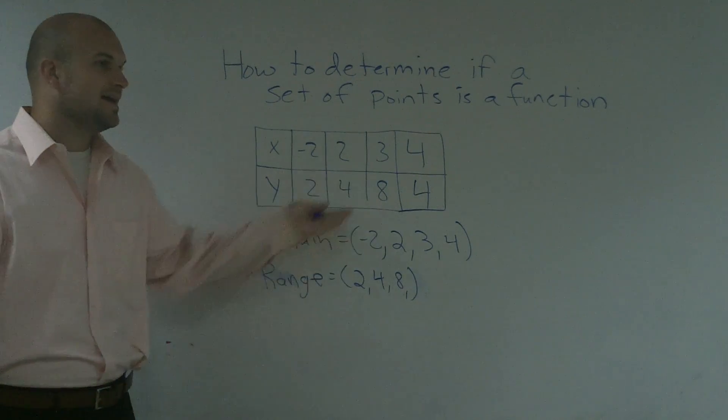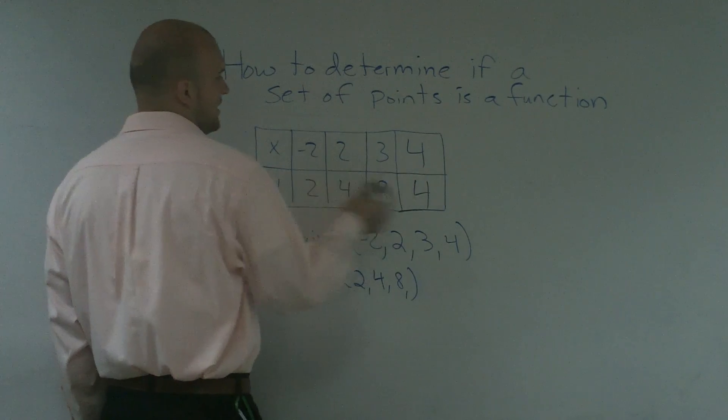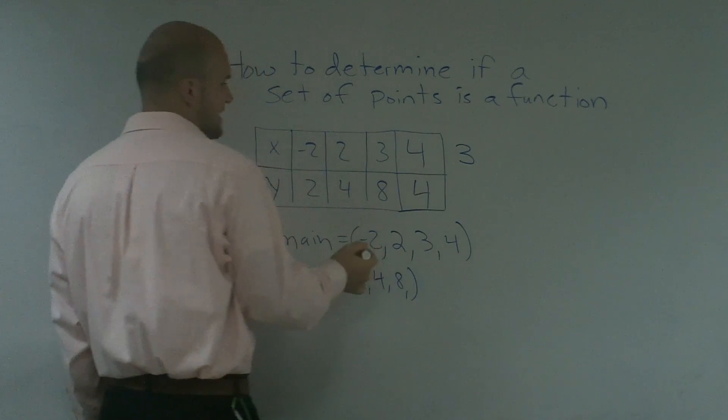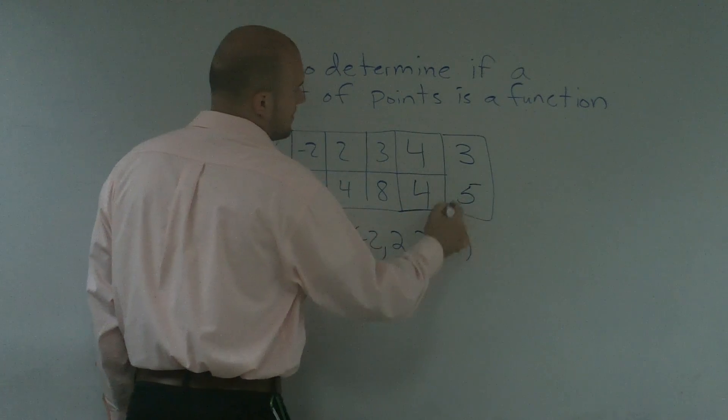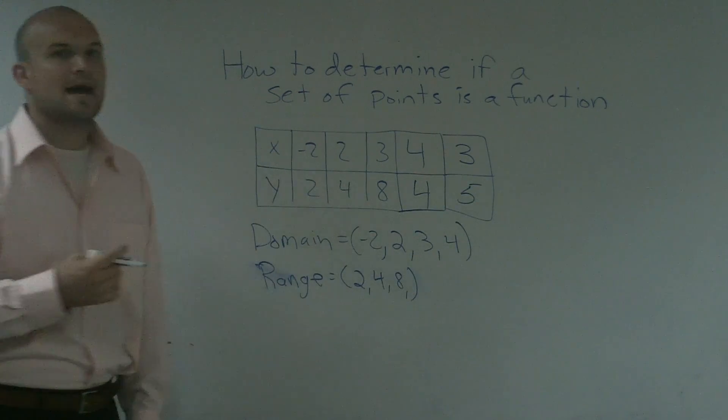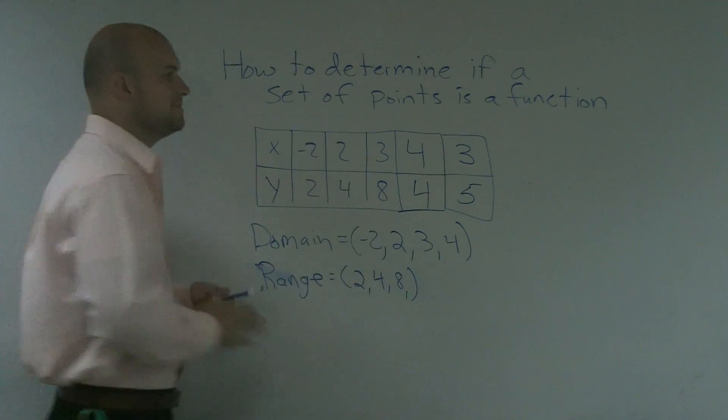As an example, if I added a point, if I added any one of these domain values and map it to a different number, now this would not be a function. You can see this right here. Now this is not going to be a function.